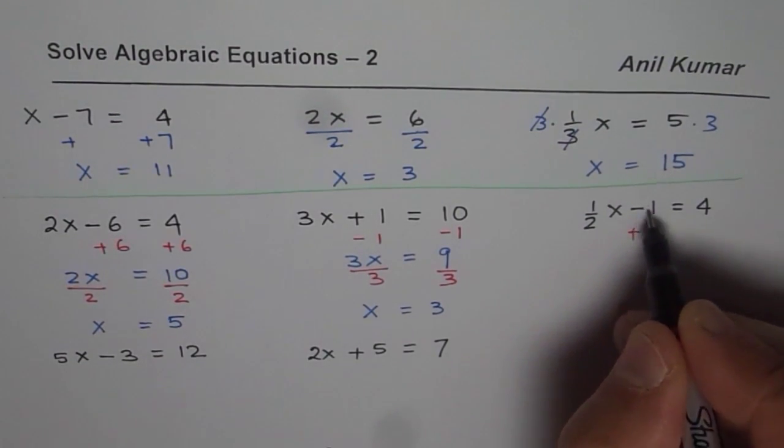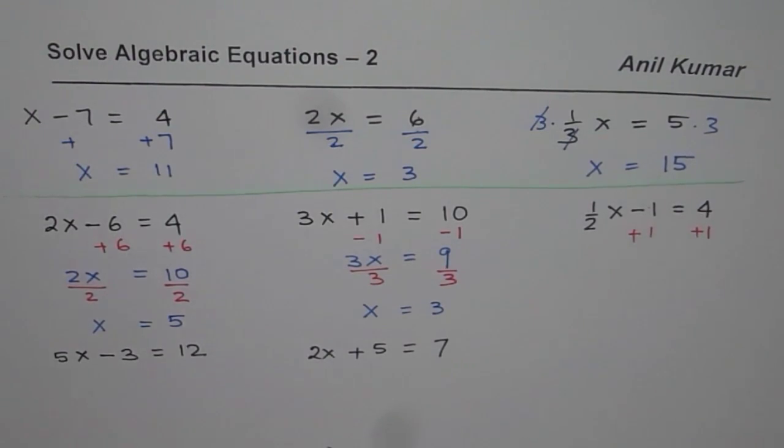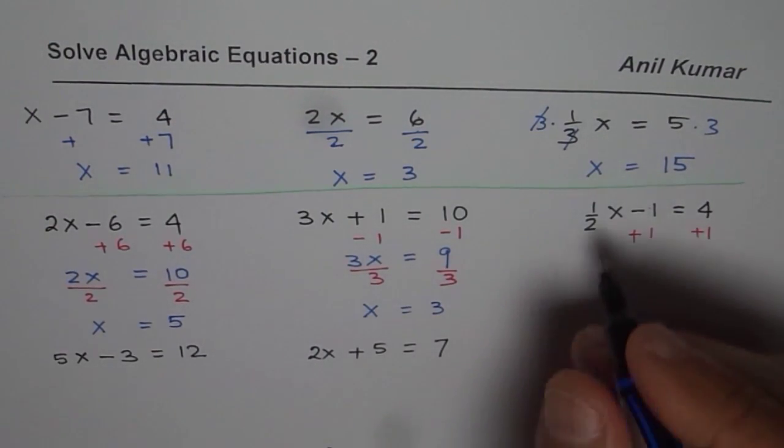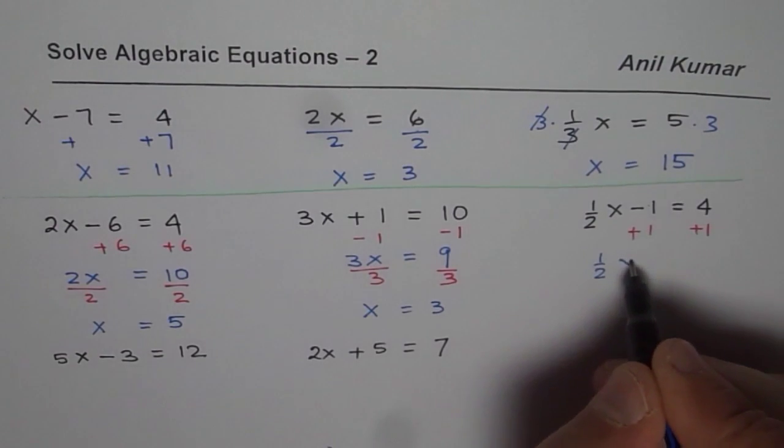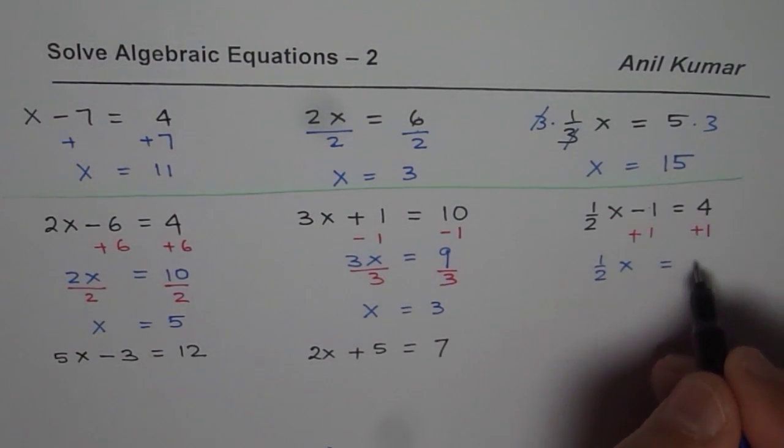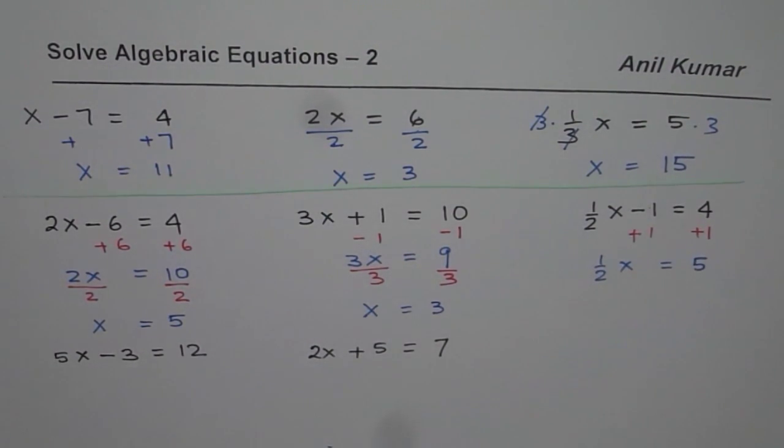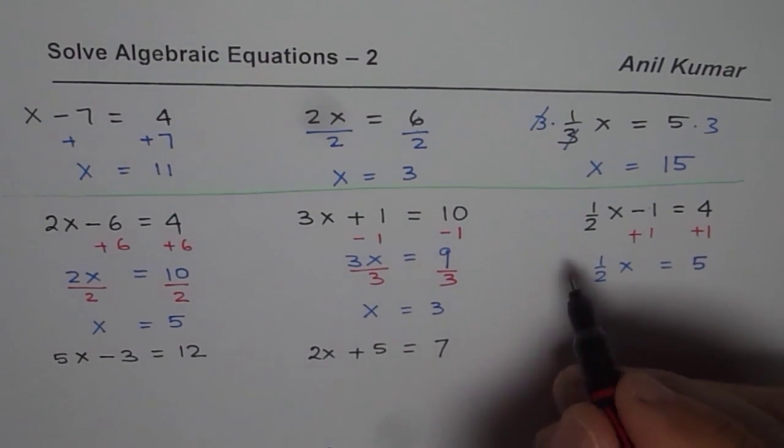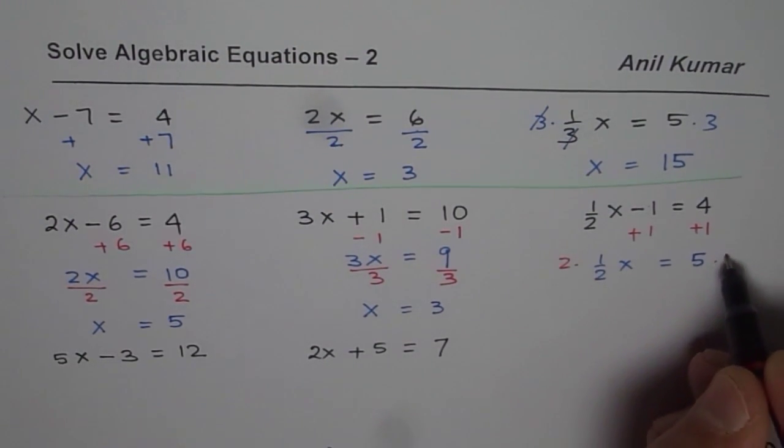Let's do the last one here. In this case what should you do first? Add 1, this is minus, add 1. If you add 1 you will get half of x equals 4 plus 1 as 5.